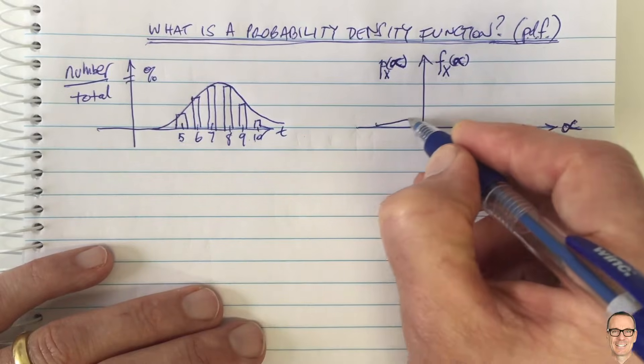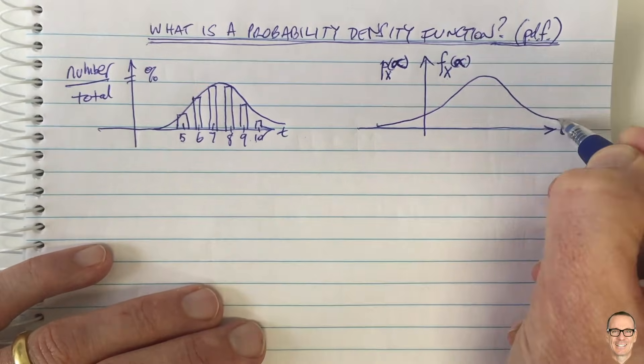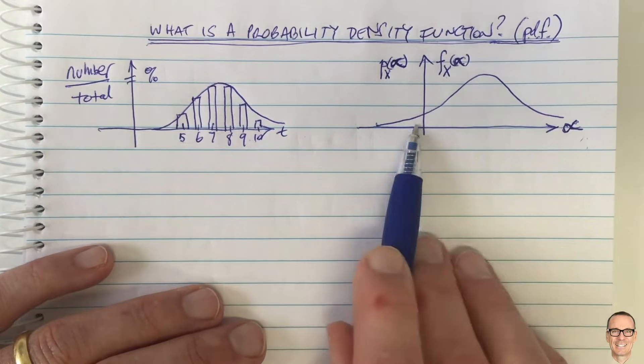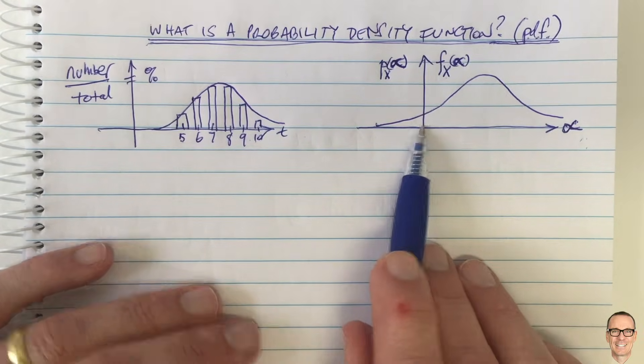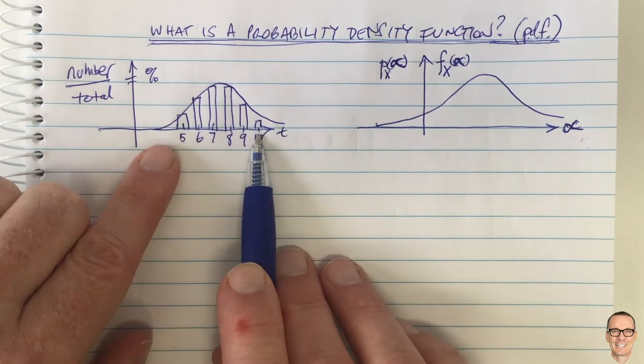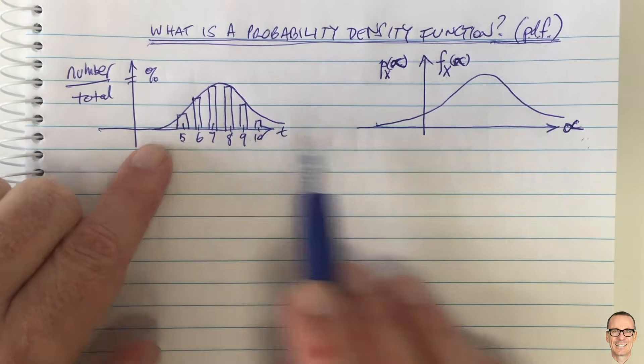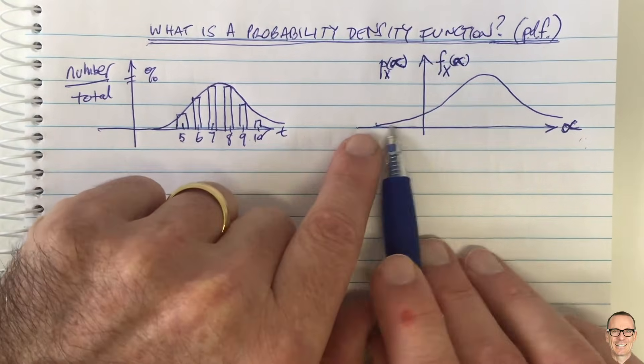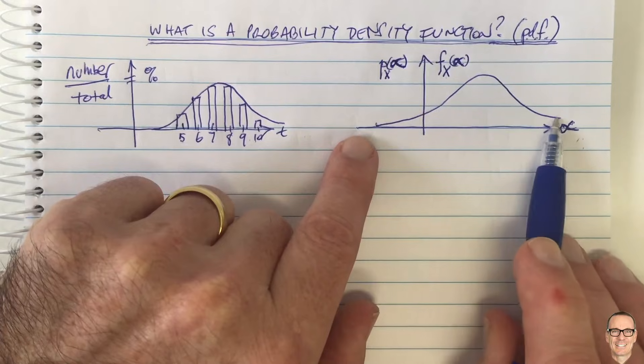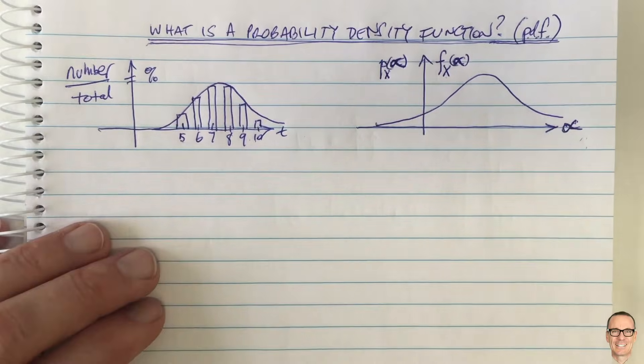And so in general, this can have a shape, any sort of shape. In this case, the one I've drawn here, it has a possibility of having negative values. Over here, the time taken to drive between two cities is obviously never negative. In this case, other random variables could have negative values. And it could have a shape like this.